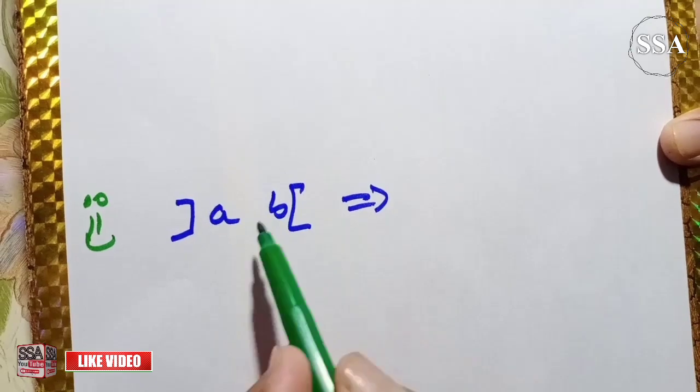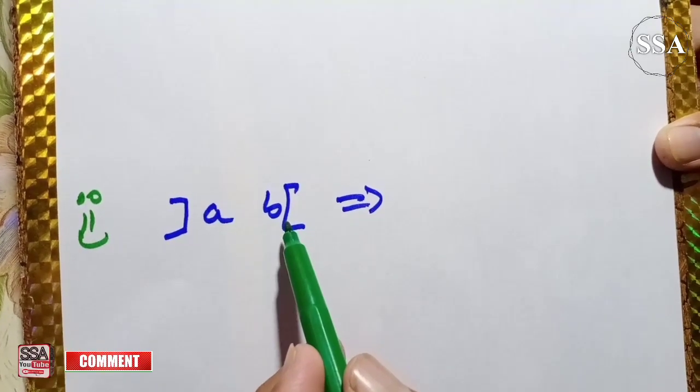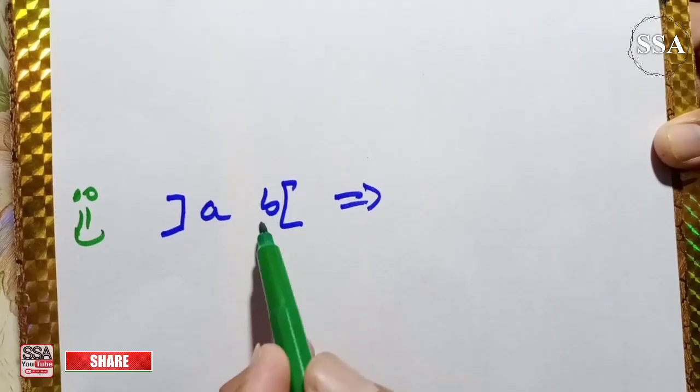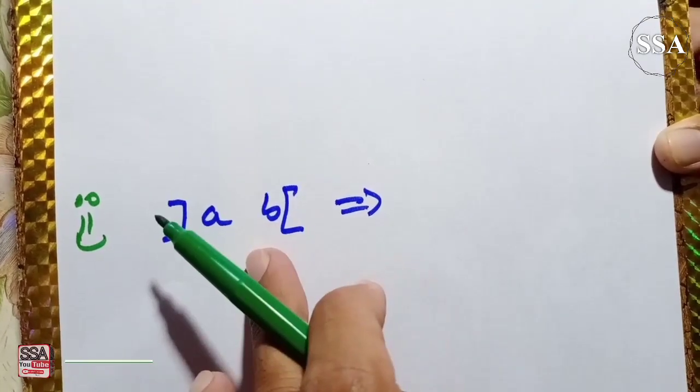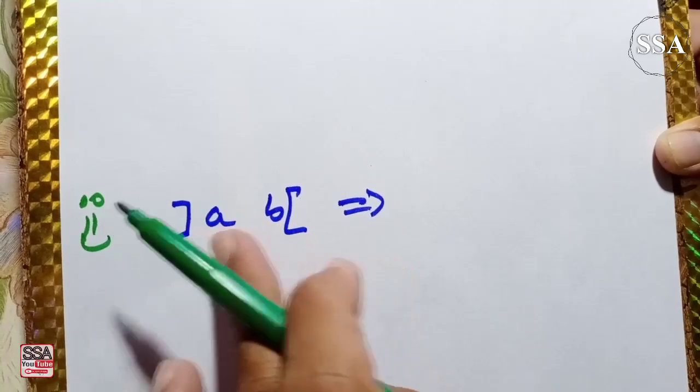In open interval, the boundary values, that is a and b, do not exist, but the values between them exist. The boundaries a or b do not exist.